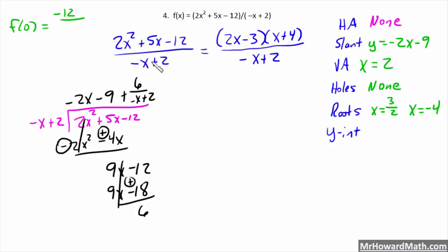And then, x is 0. So, negative 0 plus 2 would be 2. So, negative 12 divided by 2, negative 6. So, our y-intercept is 0, negative 6. So, we'll start our sketch. And if we need some additional points, we'll find those. But hopefully, that will be enough.